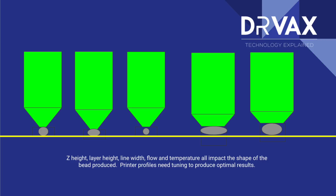In the second diagram from the left, you will see a diagram of a nozzle that's at the right height. The bead is stretched out a bit, and the actual bead is really a bit wider than the nozzle. So you might have a 0.4 millimeter nozzle, but the bead might be 0.44 or even 0.5.